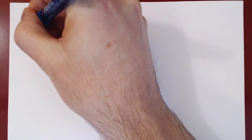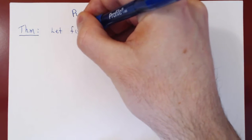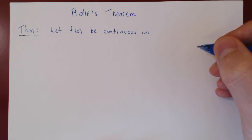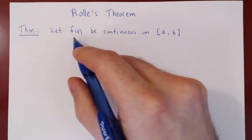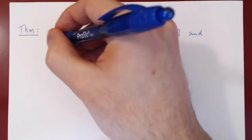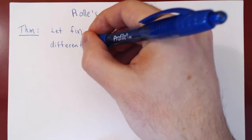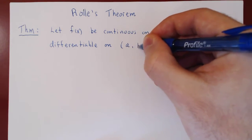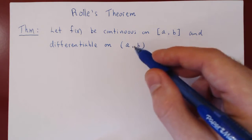So here's a statement of the theorem. We have a function — let f(x) be continuous on the closed and bounded interval [a, b], where a and b are fixed real numbers and a is less than b. And assume it is differentiable on the open interval (a, b), so we exclude a and b. We say that f is differentiable if the derivative inside (a, b) exists everywhere.